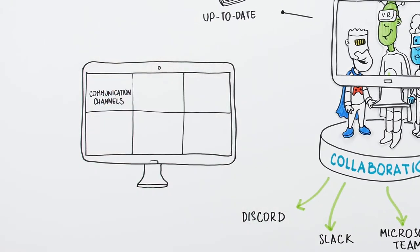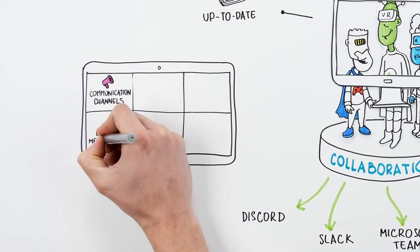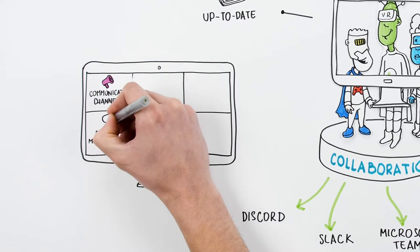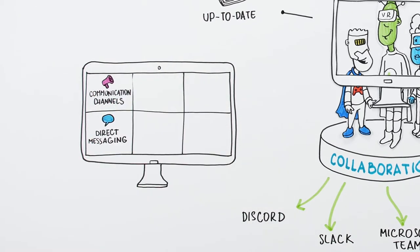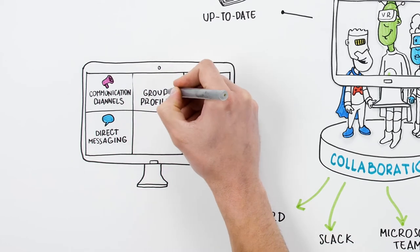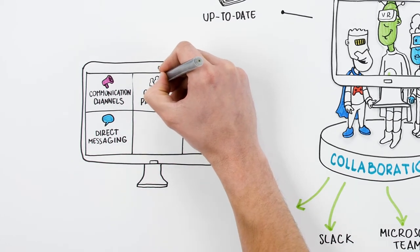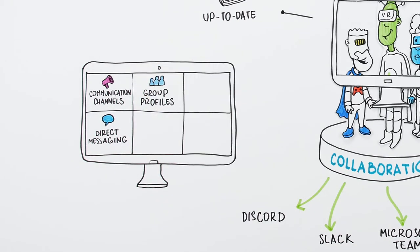Inside the workspace, there can be topic-based communication channels, private one-to-one direct messages, or private channels for some temporary action or issue that does not need all the team to be involved.